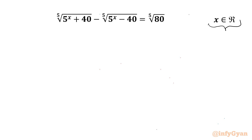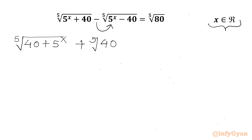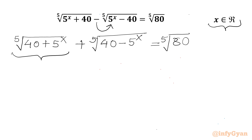Let us get started by taking the minus sign into the radicand of the 5th root. So I can write 5th root of (40 + 5^x) plus 5th root of (40 minus 5^x), and the RHS is 5th root of 80. Now I will consider the first term as substitution A and the second as substitution B. So one direct equation is: A plus B equals 5th root of 80.